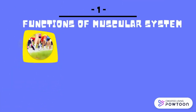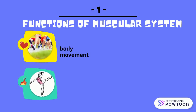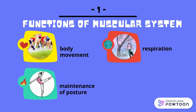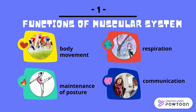Functions of the muscular system include body movement and locomotion, maintenance of posture, respiration through diaphragm and intercostal muscle contractions, and communication — both verbal and facial.